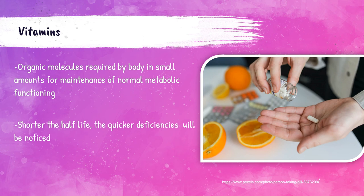Vitamins are molecules that are required in small amounts for the normal functioning of the human body. Vitamins are divided into their solubility classes: fat-soluble and water-soluble vitamins. Fat-soluble vitamins are absorbed in the intestinal tract with fat and are stored in the body's tissues. If large amounts of these vitamins are taken, they can lead to a toxic buildup. The fat-soluble vitamins are vitamin A, vitamin D, vitamin E, and vitamin K.